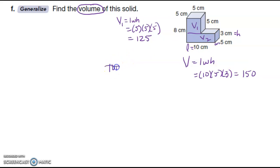Now to get my total volume, I need to add the two. So 125 plus 150 gives me 275 centimeters cubed.